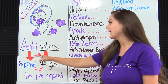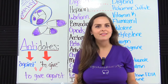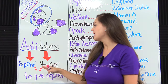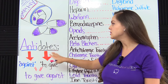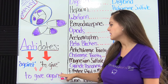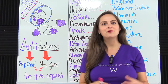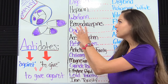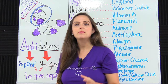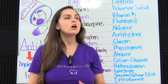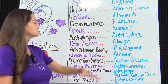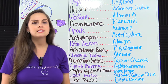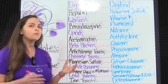What are antidotes? To help us understand that, let's take this word apart. The prefix 'anti' means against and 'dotes' means to give. So when we put all that together, we get 'to give against.' Antidotes are substances that we can give to work against toxicities, overdose, or poisoning that is occurring in the body.